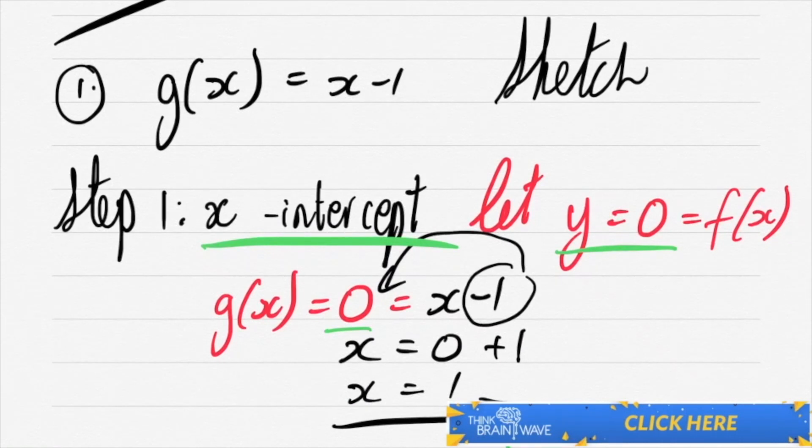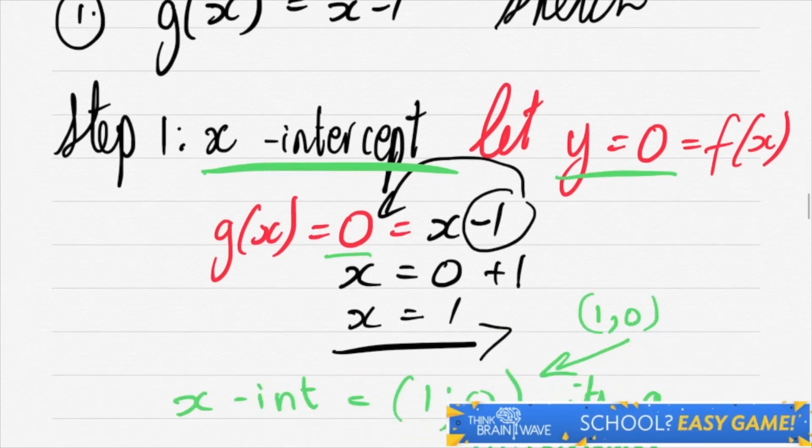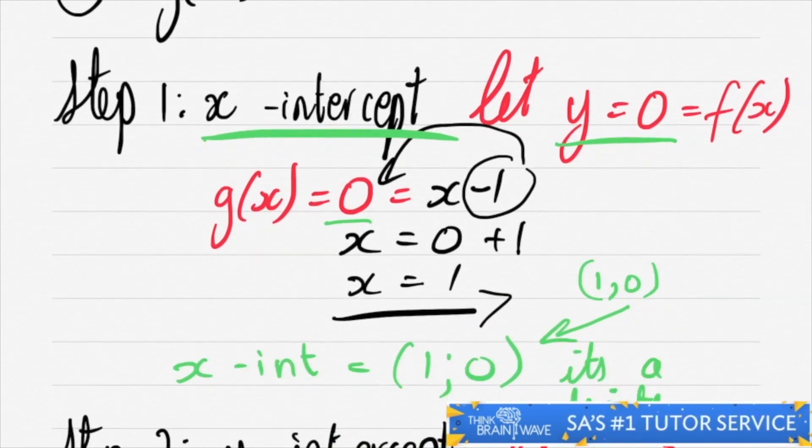Easy game. So now this means that you've got (1, 0) as written below. That's your x-intercept. Because your 1 is your x and your 0 is your y from above over here.